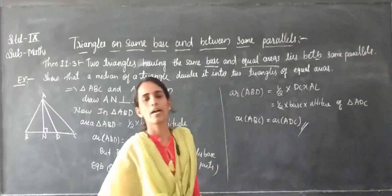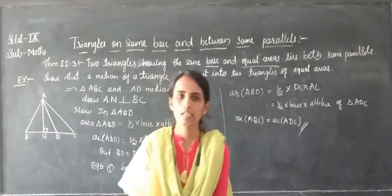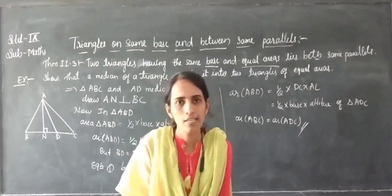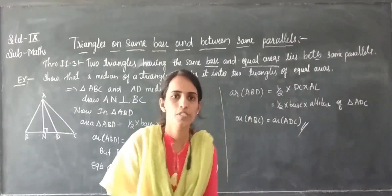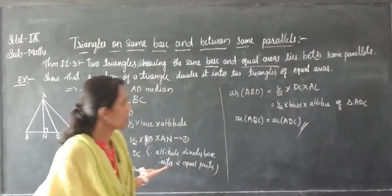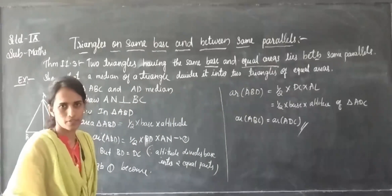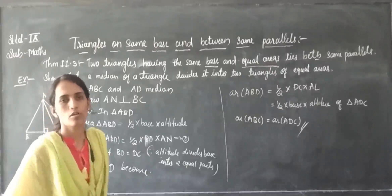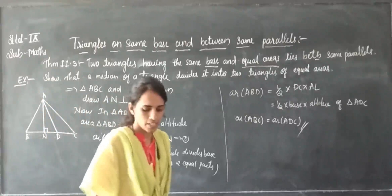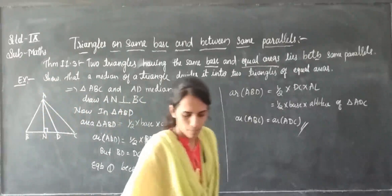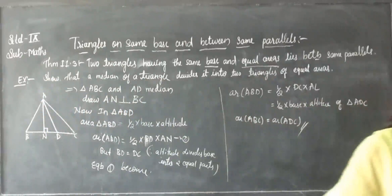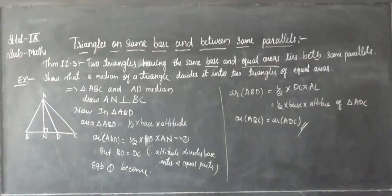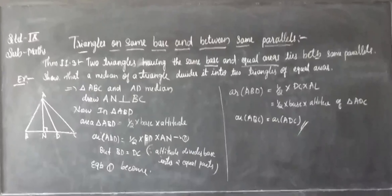Equal to area of triangle ABC divided by 2. So this is the example. Let's see one more example. I will go through all the results.